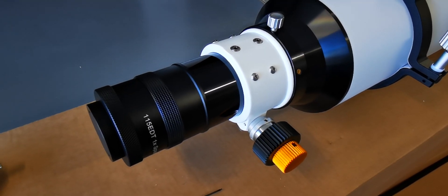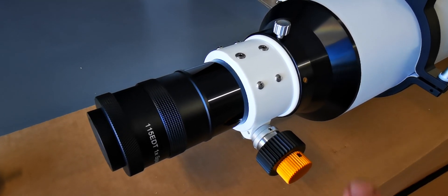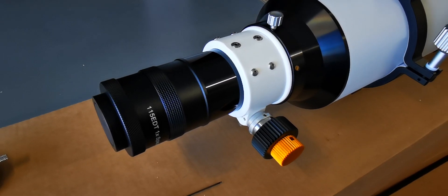That's how you attach the new reducer flatteners to the Starwave Ascent range of telescopes with the white focusers. Thanks for watching.